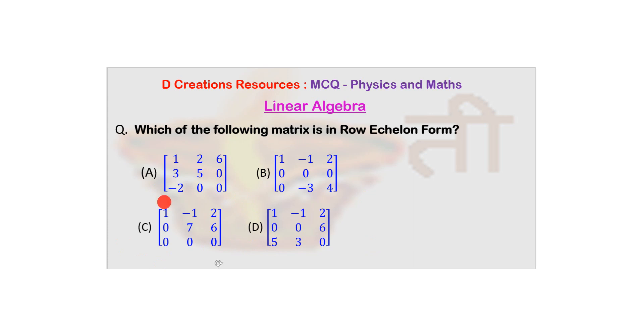Also, you can see that the leading entry here is one, here it is seven. So seven is to the right of one. So that is also satisfied. And all the entries below the leading entry, that means these two, they are zero. So all the entries below one, the leading entry, are zero.